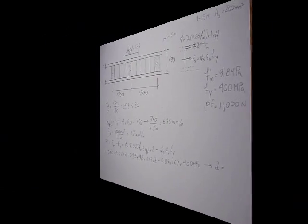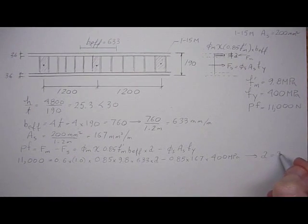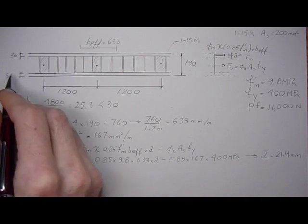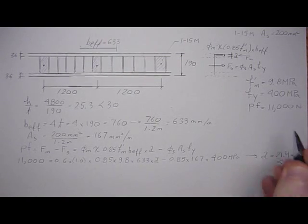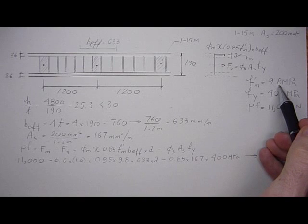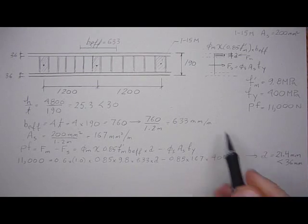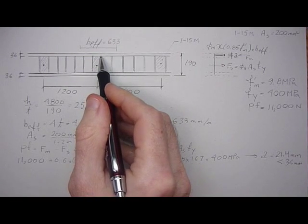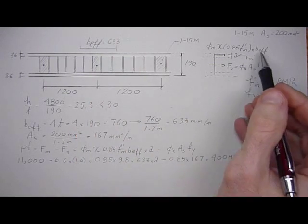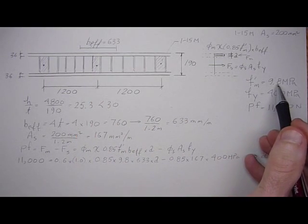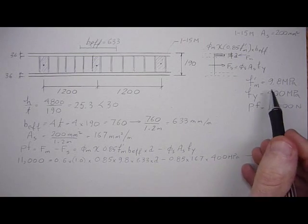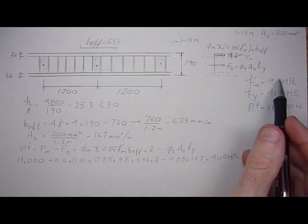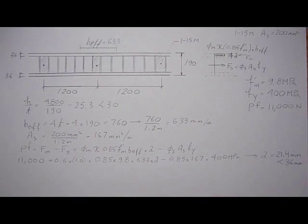Let me work that out. And A comes out to 21.4 millimeters, which is less than 36 millimeters. So the assumption of using an F′m of 9.8 is correct. If the neutral axis fell below the thickness of the flange, then we'd have to use some kind of averaged F′m of hollow to grouted core. But because it's not the case, we can use the hollow F′m value.